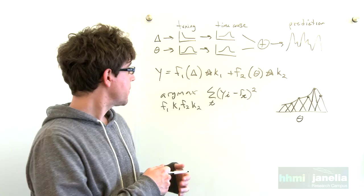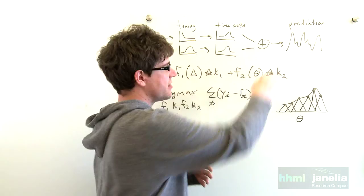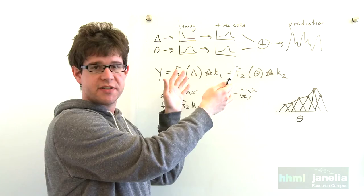The model we developed is a nonlinear encoding model that's diagrammed here. On one side of the model are the sensory inputs, this is the touch and the movement, and on the other side is the prediction of the neural response. And the pieces in the middle are the parameters or the components of the model, including both the static nonlinearity as well as a temporal kernel.